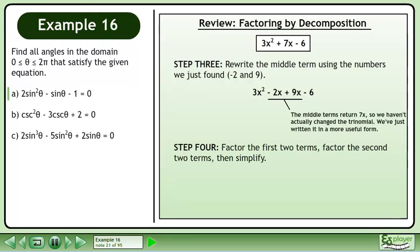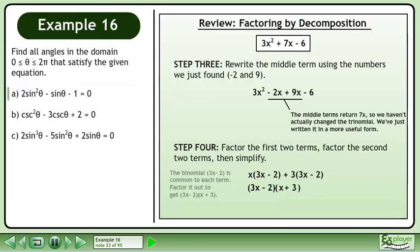In step 4, factor the first two terms, factor the second two terms, then simplify. This gives us x(3x - 2) + 3(3x - 2). The binomial 3x - 2 is common to each term. Factor it out to get (3x - 2)(x + 3). We have now factored the trinomial.